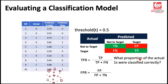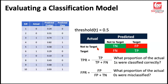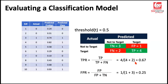TPR talks about what proportion of the actual ones were classified correctly. False negatives plus true positives gives the total number of actual subscribers, and true positives is where the model and actual finding are in sync. So of the total actual ones, how many were identified correctly — that proportion is the true positive rate. Likewise, of the total negative class, what proportion did we misclassify is the false positive rate. Plugging in our values, the true positive rate is 0.67 or 67%, and the false positive rate is 25%. This is at a threshold of 0.5.